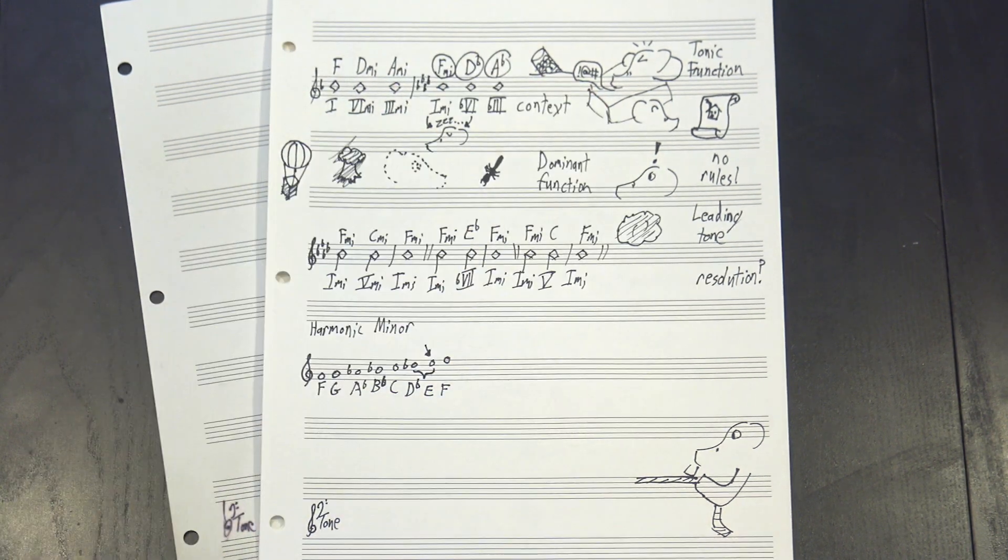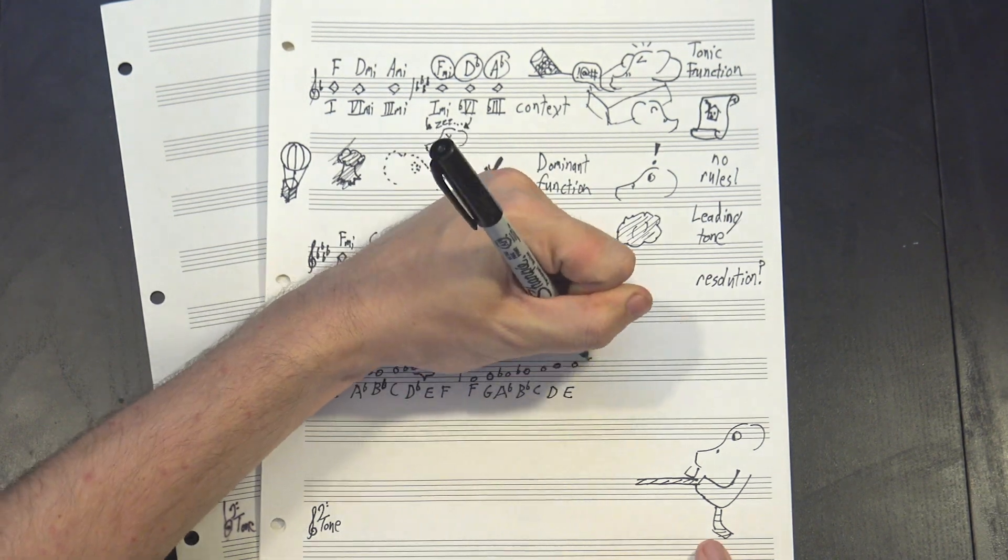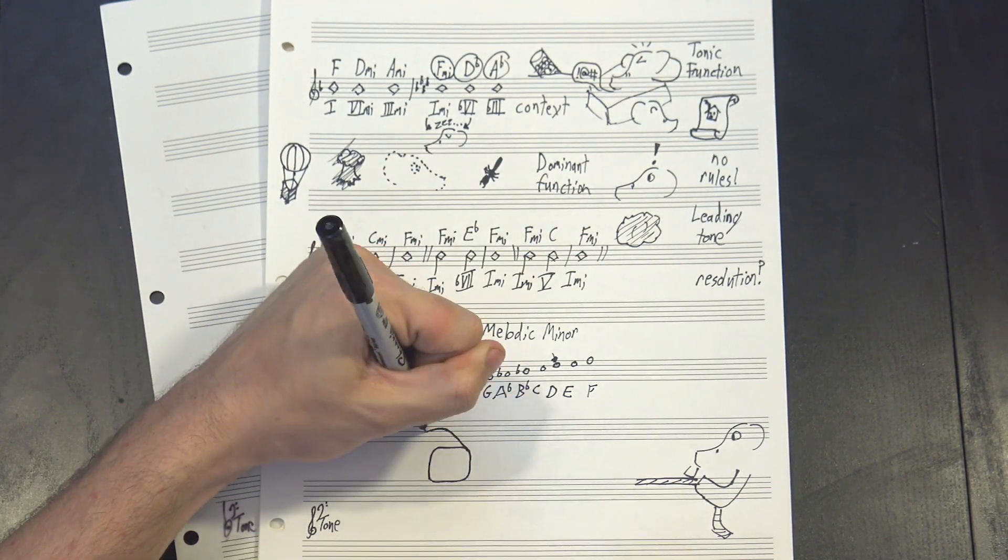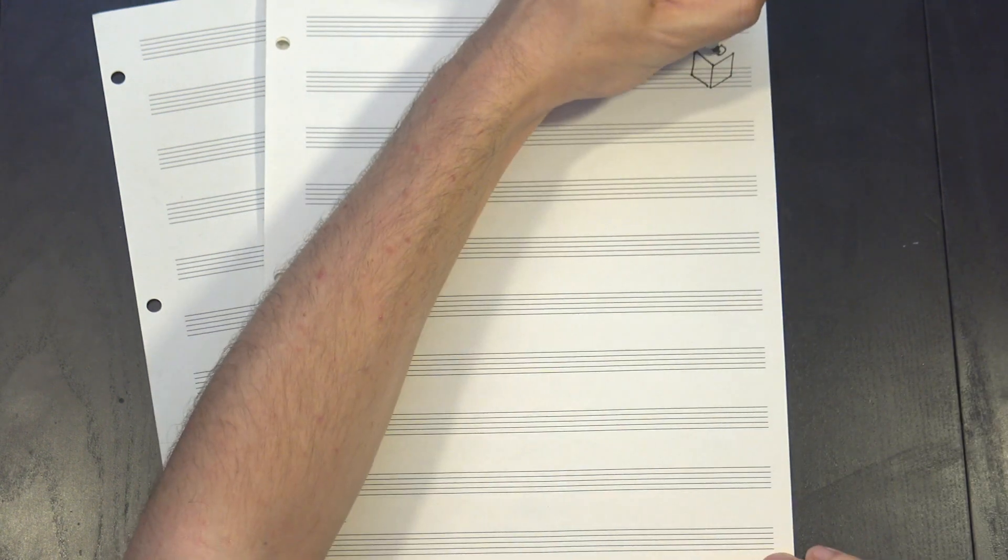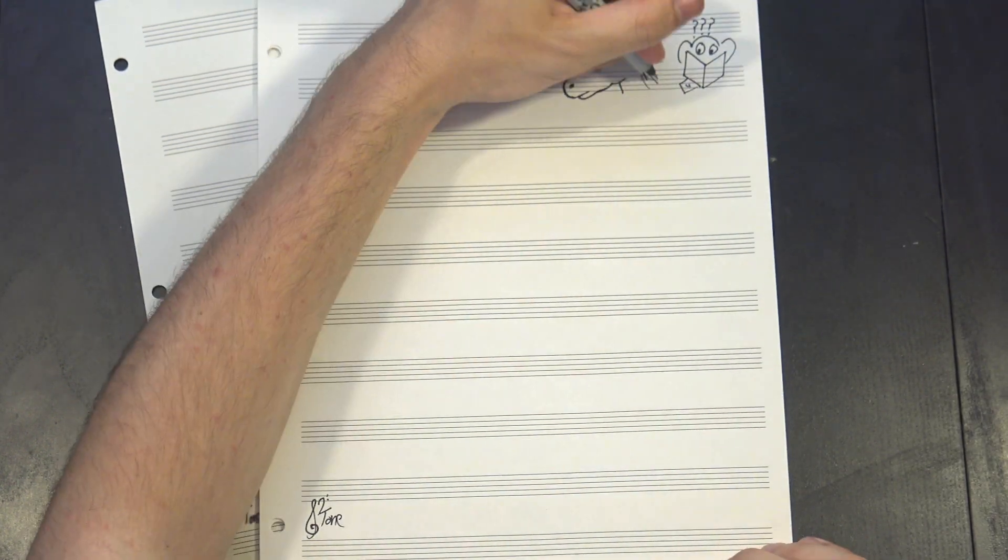But this gap here is a bit weird, so we also invented something called melodic minor, which raises this note too in order to make the scale sound a bit smoother. But if tonic function is harder to define, and dominant function needs special changes in order to even exist, then the big winner is subdominant function.